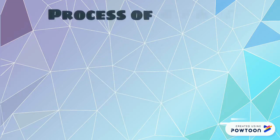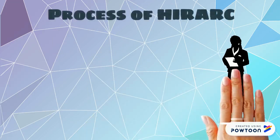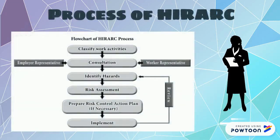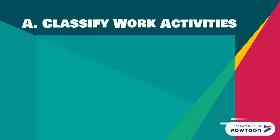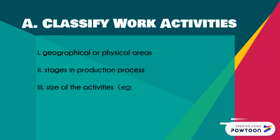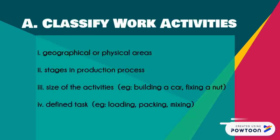The process of HIRARC includes 4 basic steps: classify work activities, identify hazards, conduct risk assessment, and decide on risk control. The works are classified in accordance with their similarity, based on the factors shown below.